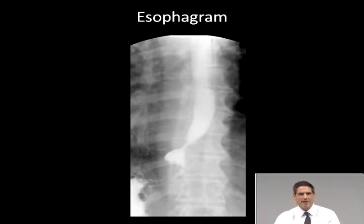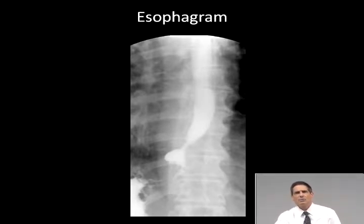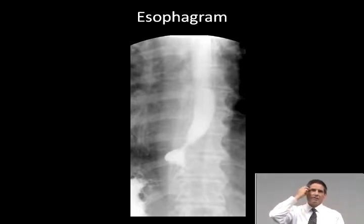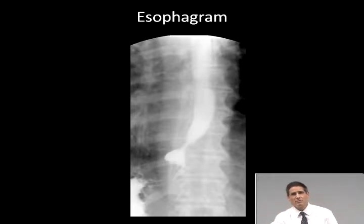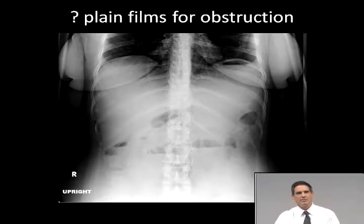Esophagrams are performed for esophageal dysphagia, where the patient has symptoms several seconds after initiating the swallow, usually with pain lower down. Most patients with esophageal dysphagia nowadays are evaluated with endoscopy rather than esophageal swallowing study. The esophagram, unlike the swallowing study, is performed by radiologists without a speech pathologist. The radiologist usually performs and interprets the study using a combination of thin barium or gas-forming crystals with prone and upright views, looking for normal esophageal motility and stripping wave, strictures, ulcerations, and abnormalities or inflammation of the mucosa.